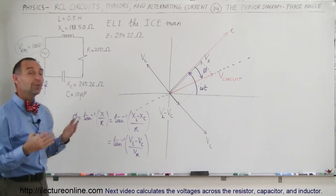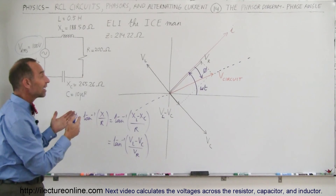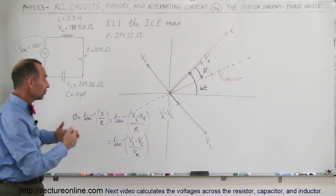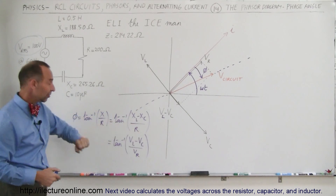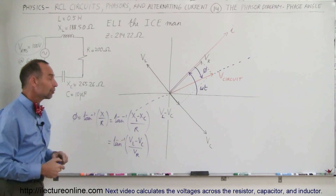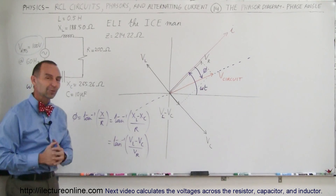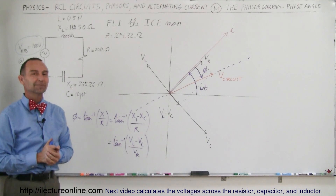This will enable you to find the phase angle of the circuit — using reactances and resistance, or using the voltages across the three components. And that's how we do that.